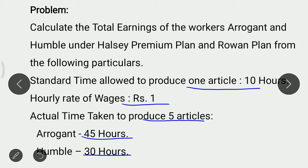In the problem, time allowed to produce one article is 10 hours. Both produce 5 articles. 10 into 5, time allowed is 50 hours. Out of which, Arrogant utilizes 45 hours and Humble utilizes 30 hours. Now we will see the solution.